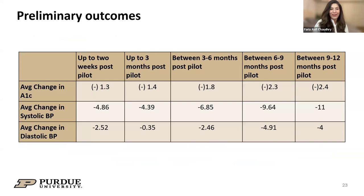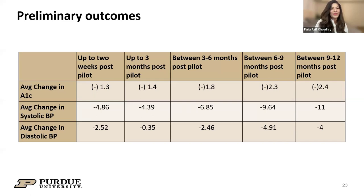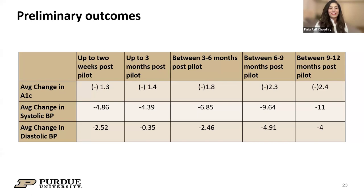For preliminary outcomes, we tracked A1C and systolic blood pressure. Most of these are post-pilot results. If you provide nutritious meals while patients are receiving them, you will see improvements in blood pressure and A1C. But we really wanted to make sure the changes were longitudinal. Even at three months post-intervention, and six to nine months and beyond, we are still seeing improvement in A1C and blood pressure. This shows that the model we're developing is successful, and that the complementary education is helping patients integrate these changes into their lives.